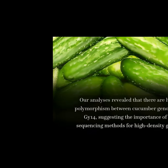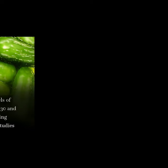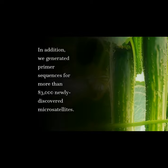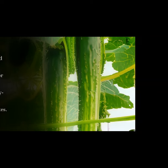Our analyses revealed that there are high levels of polymorphism between cucumber genotypes 9930 and GY14, suggesting the importance of improving sequencing methods for high-density genetic studies. In addition, we generated primer sequences for more than 83,000 newly discovered microsatellites.